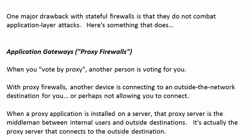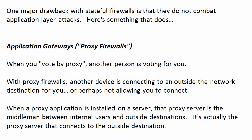When you vote by proxy, another person actually casts your vote for you. With a proxy firewall, another device connects to an outside-the-network destination for you — or perhaps doesn't allow you to connect. When a proxy application is installed on a server, that proxy server is the middleman between internal users and outside destinations. It's actually the proxy server that connects to the outside destination.